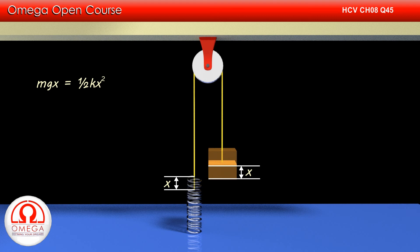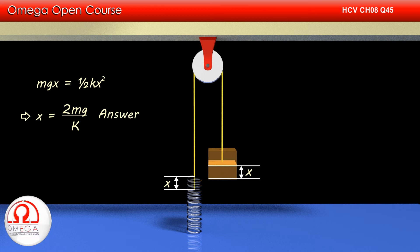We know that if the block moves down by x, its gravitational potential energy is decreased by mgx. Also, if the spring is elongated by x, its spring potential energy is increased by half kx square. Equating these two energies, we get mgx equals half kx square. This implies x equals 2mg by k. This is our answer.